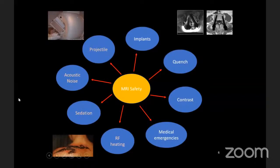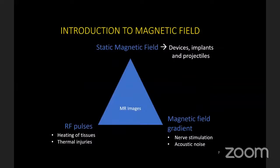Let me introduce the three different types of magnetic field effects. One is caused by the static magnetic field of the magnet, which gives rise to device and implant projectile injuries. Second would be the effects of radiofrequency pulses, which leads to heating of tissues and thermal injuries. And then there's the magnetic field gradient, which can cause nerve stimulation injuries or acoustic noise.